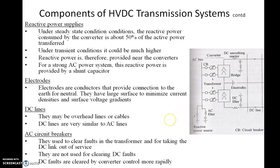Reactive power supplies are also essential. Under steady-state conditions, the reactive power consumed by the converter is about 50% of the active power transferred. So if you are transferring 100 MW, 50 MVAR of reactive power would be used — which is a huge value. Under transient conditions it could be even higher. This reactive power is provided by a shunt capacitor connected in parallel.